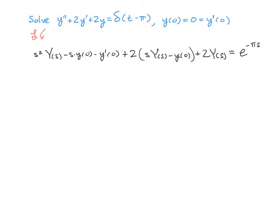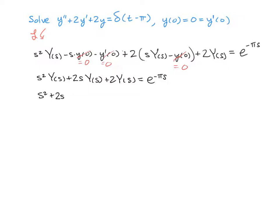Now because we have the zero initial conditions, we can just replace those terms with zero. When we do that we end up with s squared big Y of s plus two s big Y of s plus two big Y of s is equal to e to the negative pi times s. If we now factor this, s squared plus two s plus two times big Y of s is equal to e to the negative pi s. Dividing through gives us big Y of s is equal to one over s squared plus two s plus two times e to the negative pi s.